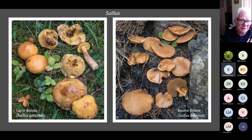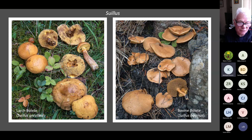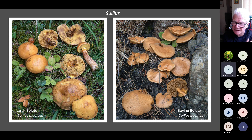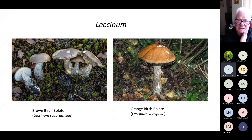Color change in the stipe, cap, and flesh of boletes is really very important for identification. One of the most striking is Neoboletus luridiformis — its pores can be a rich red color, and if you slice the fruiting body it goes intensely blue instantly. Then there's the genus Suillus — many grow with conifers and are, I think, the only boletes with a ring on the stem. Larch bolete on the left has been incredibly common in southwest Wales due to the amount of larch in our landscape. On the right is the bovine bolete, Suillus bovinus, identifiable by its enormous pores visible underneath the cap.